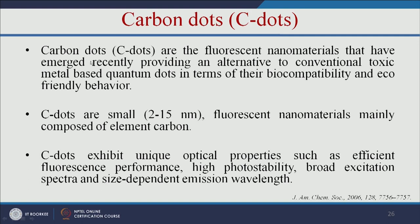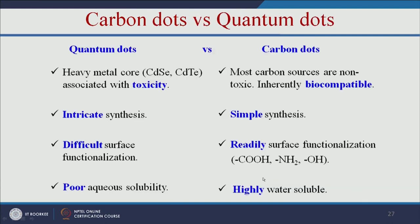Another nanomaterial is carbon dots — fluorescent nanomaterials that have emerged recently, providing an alternative to conventional toxic metal-based quantum dots. Carbon dots are made up of carbon, are highly biocompatible and eco-friendly, and are small in size — 2 to 15 nanometers. They exhibit unique optical properties such as high photo stability, broad excitation spectra, and size-dependent emission wavelength, similar to quantum dots. Unlike quantum dots, carbon dots have low toxicity, simple synthesis, readily available surface functionalization, and high water solubility.